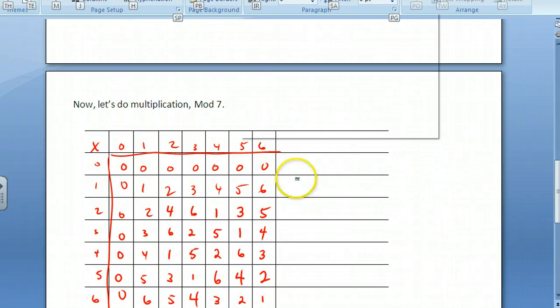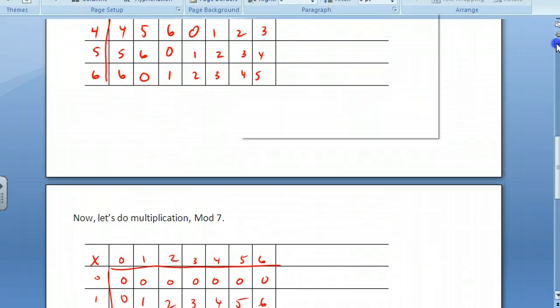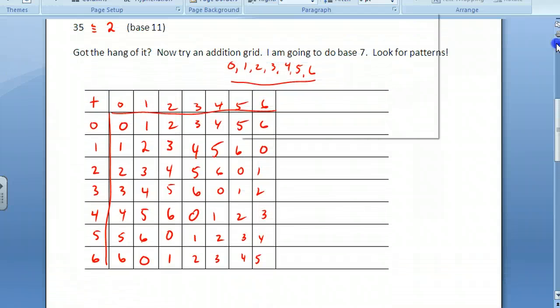Okay, so here's the multiplication filled out. Now to do the artwork, what you do is you pick some colors and some shapes, and you make what we call a key. And so I can go off to the side here, and I can take my values. For instance, 0, 1, 2, 3, 4, 5, 6.